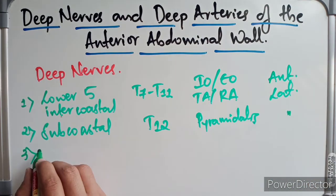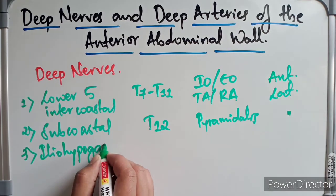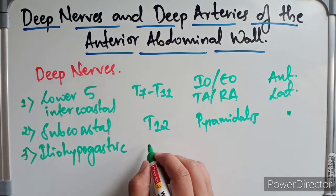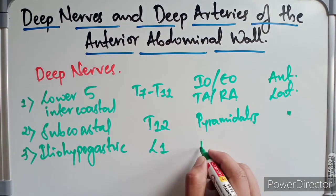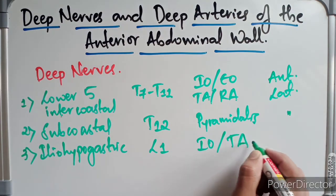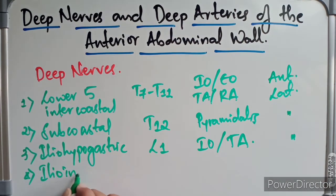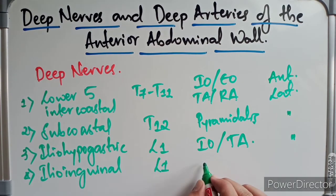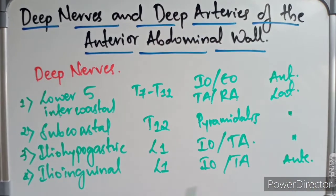The third deep nerve is the ilio-hypogastric nerve, with a root value of L1. It supplies motor branches to the internal oblique and transversus abdominis, and has cutaneous branches. The fourth nerve is the ilio-inguinal nerve, also with a root value of L1. It supplies the internal oblique and transversus abdominis with motor branches, and has only an anterior cutaneous branch, not a lateral one.